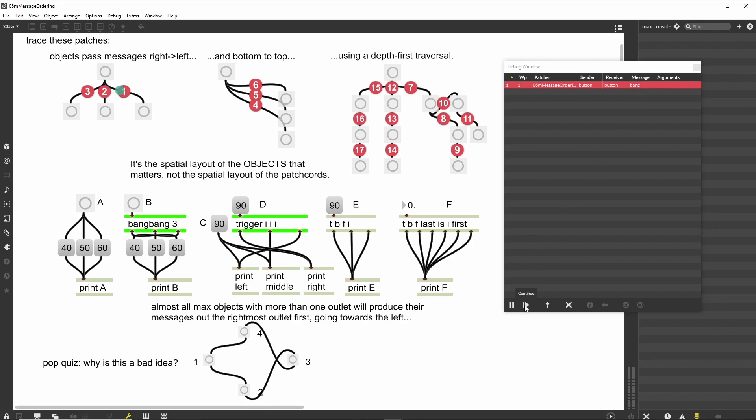Select step from the debug menu. You will see that the middle chord flashes. Select step again and you will see that the leftmost chord flashes. Select step once more to finish our patch trace. When the outlet of an object is connected to more than one inlet, the messages are sent in right-to-left order.